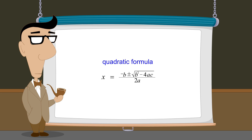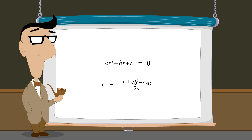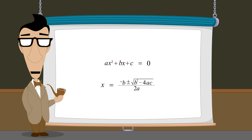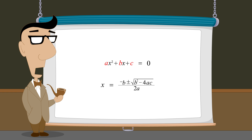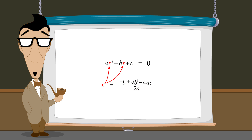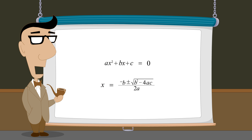Given any general form quadratic equation ax-squared plus bx plus c equals zero, the values for the constants a, b, and c are entered into the formula that then produces the solutions to the equation. In other words, given the values of a, b, and c, this formula tells us the values of x that will cause the quadratic expression to have a value of zero. In this lecture, we will show how this quadratic formula can be derived from the process of completing the square, and show why the quadratic formula is so useful.